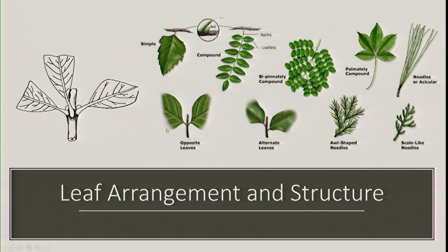Some leaves are opposite. In this area we don't have too many trees with opposite leaf arrangements — we have maples, ash, and dogwood. So if I'm looking at a tree and it has alternating leaves like a staircase, I automatically know it's not a maple, not a dogwood, and not an ash.